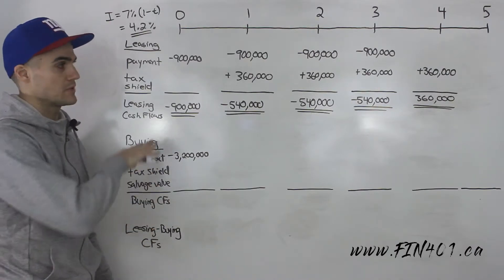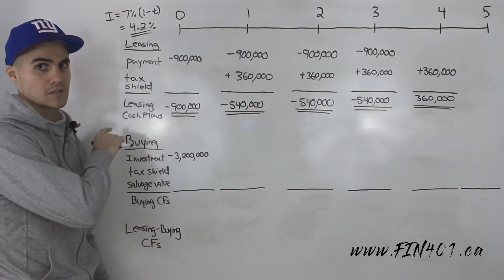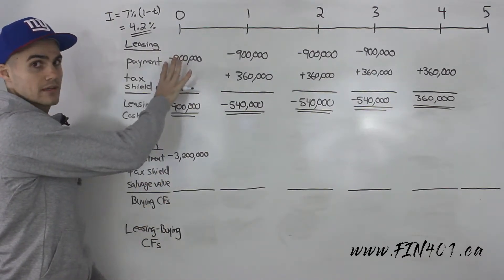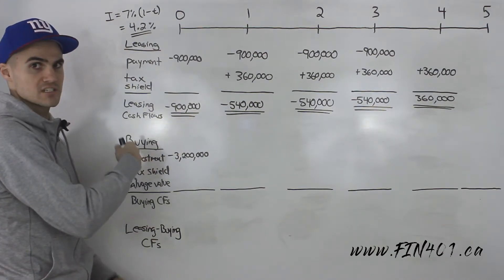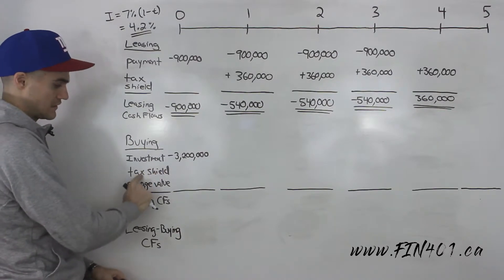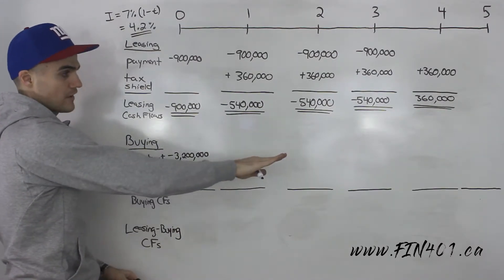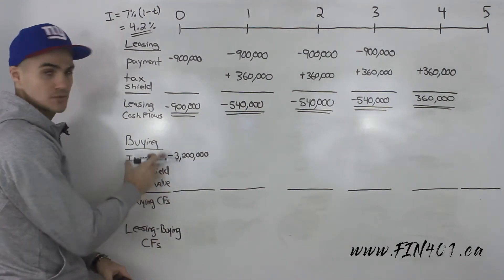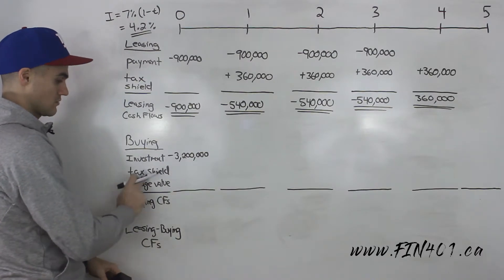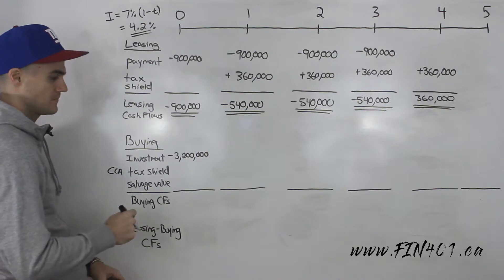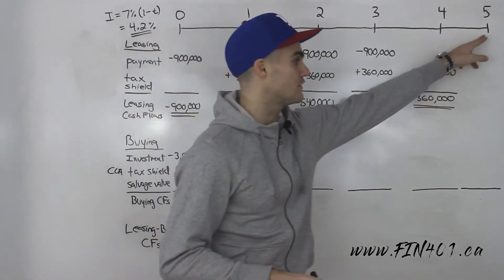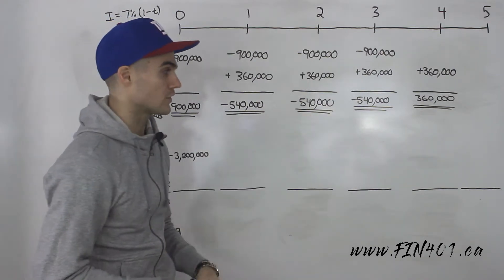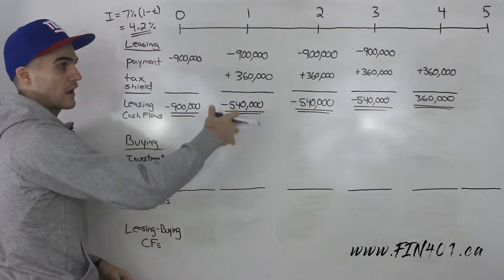As for the timeline, the leasing portion is exactly the same as the previous question — what's changing is the buying portion, and more specifically the tax shield row. The values there have been erased; instead of a constant $320,000 for four years, the CCA tax shield changes every year. The timeline also now includes a fifth year for that terminal loss, which is a positive cash flow when we file taxes.